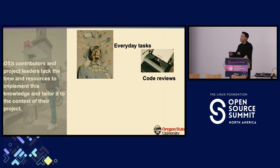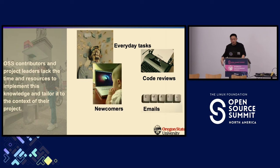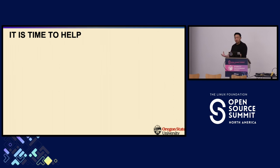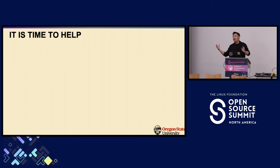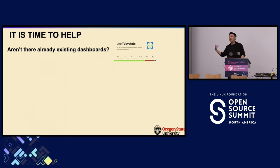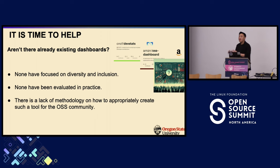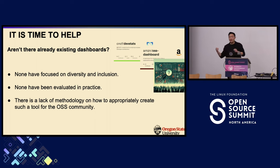Imagine their daily tasks. They have to do tons of code reviews. They need to onboard newcomers. They have to send out emails. They are just naturally burning out. So it's time to help — but by how? We are not here to show you more challenges or throw more insights at you. We already have plenty. Maintainers already have different dashboards, but none of these dashboards focus on diversity and inclusion, and none of them have been systematically evaluated in practice. There is currently no report that can guide the design of similar tools in the future, and different teams implement such tools in different ways, lacking a standardized approach.